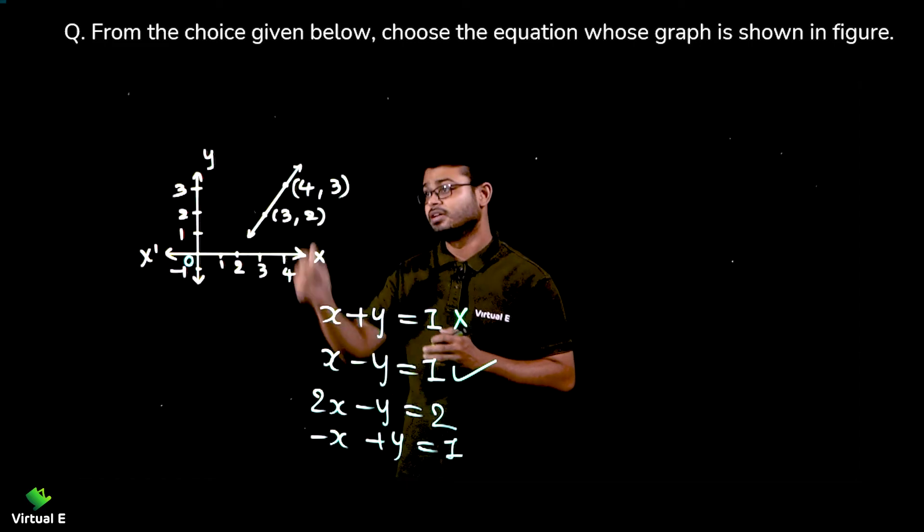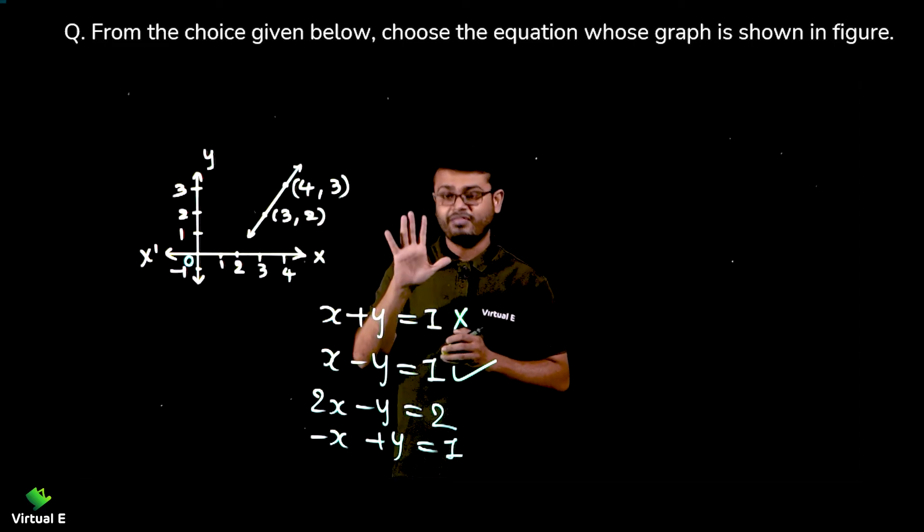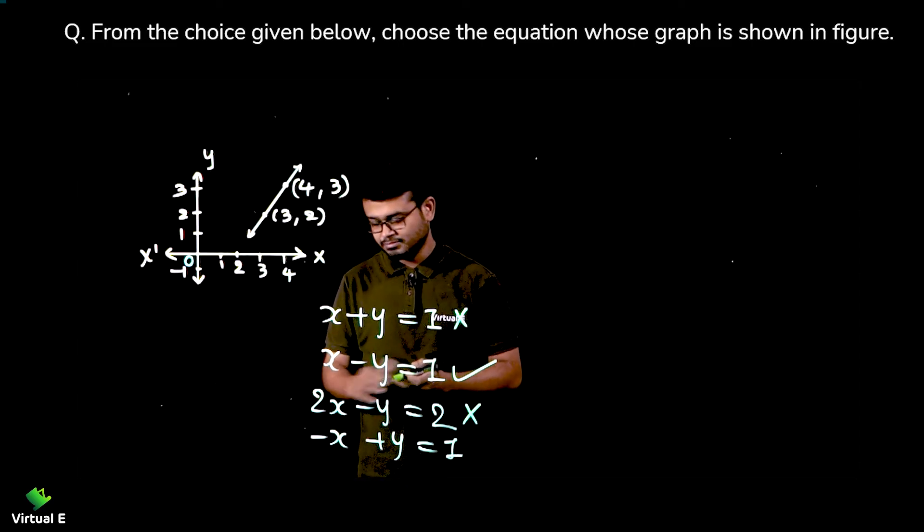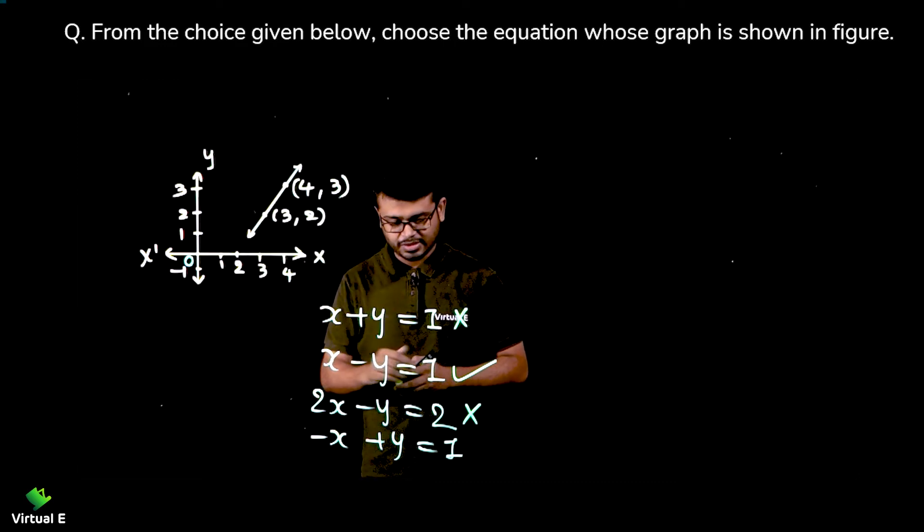Now let's check for this one: 2x minus y. Four times two is eight, eight minus three is what, five. We have two over here so not valid. Then minus x, so minus four plus three, that is minus one. But we have one over here so that is also not valid.